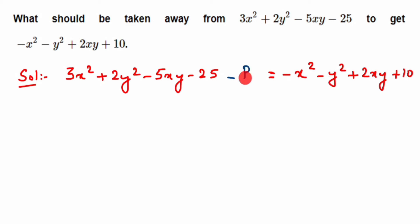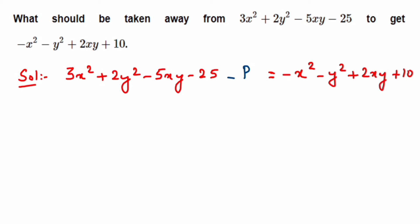P is unknown and we have to find it. I'm going to transpose minus P to the other side. The sign on P is minus, so if I transpose the entire first expression to the other side I'll get the answer, but then I'd need an extra step to remove the minus sign. Instead, I'll transpose minus P to the right side so it becomes positive, and bring the right-hand side terms to the left.